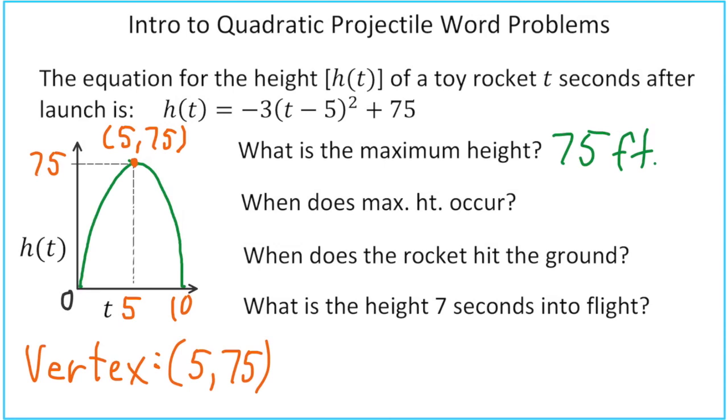Alright, when does the maximum height occur? That's the t value at the vertex. So the maximum height occurs at 5 seconds.